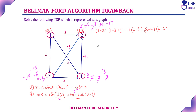Even after relaxing the edges n minus 1 times, the values keep changing. The Bellman-Ford algorithm does not work properly here — because it forms a cycle: 2 to 3, 3 to 4, and 4 to 2. It forms a cycle with negative weights. When Bellman-Ford algorithm encounters a cycle with negative weight or negative cost, it will not give a proper result. This is the main drawback of Bellman-Ford algorithm — when it forms a negative weight cycle, it will not give the correct result.